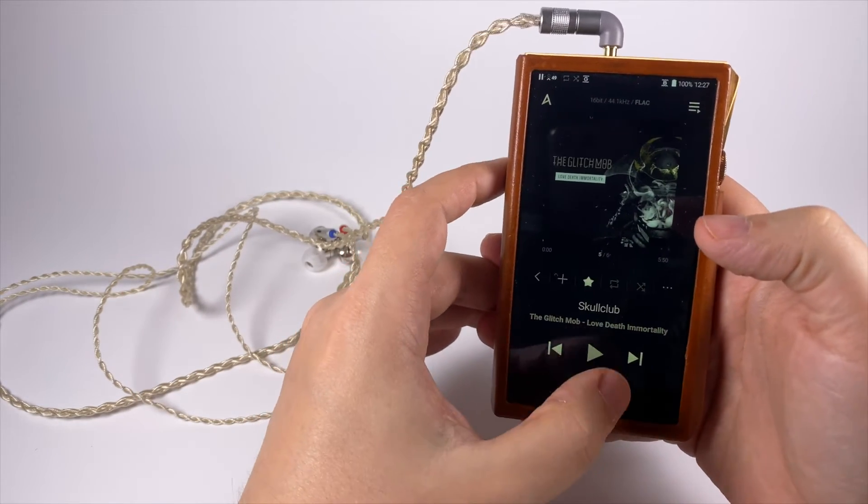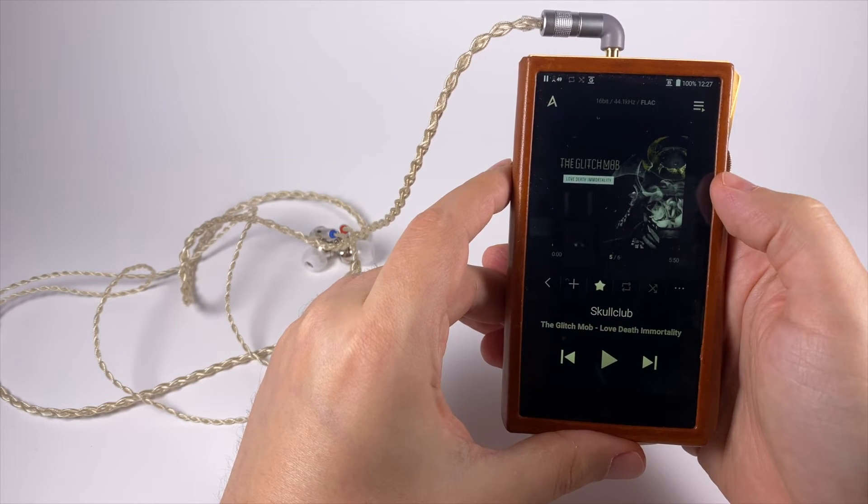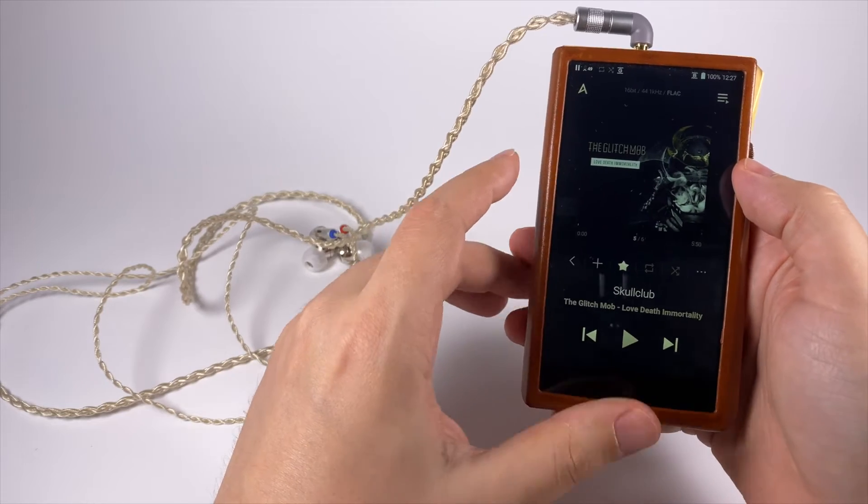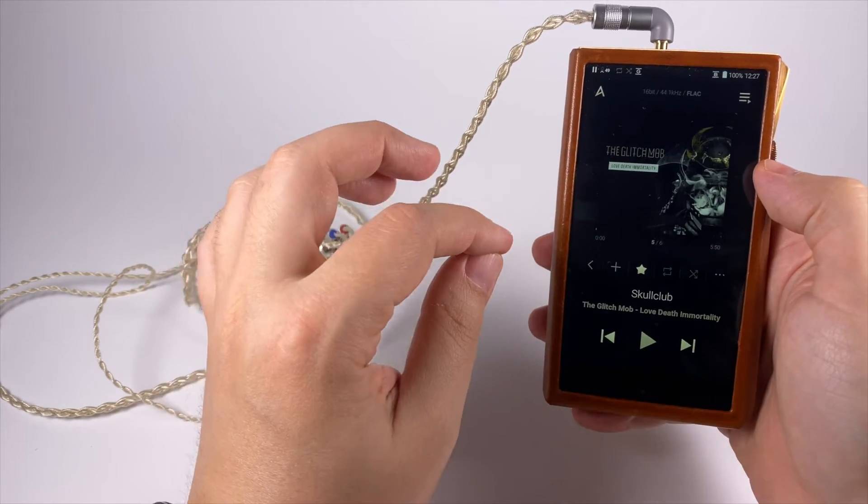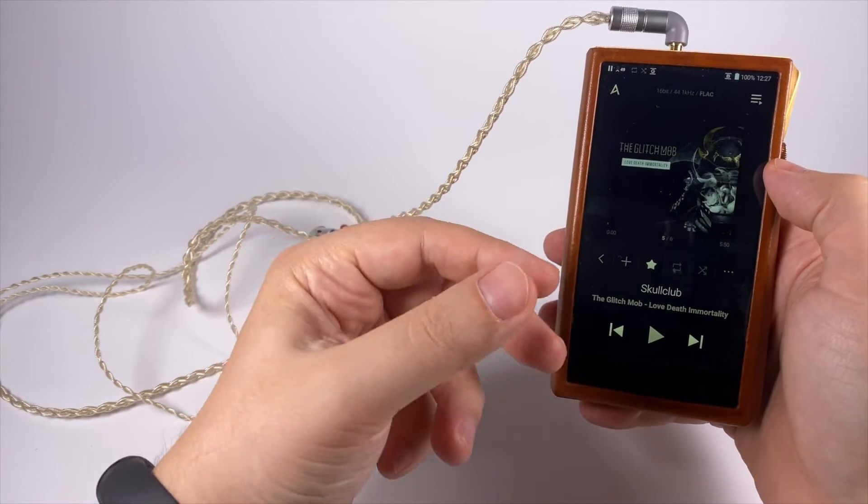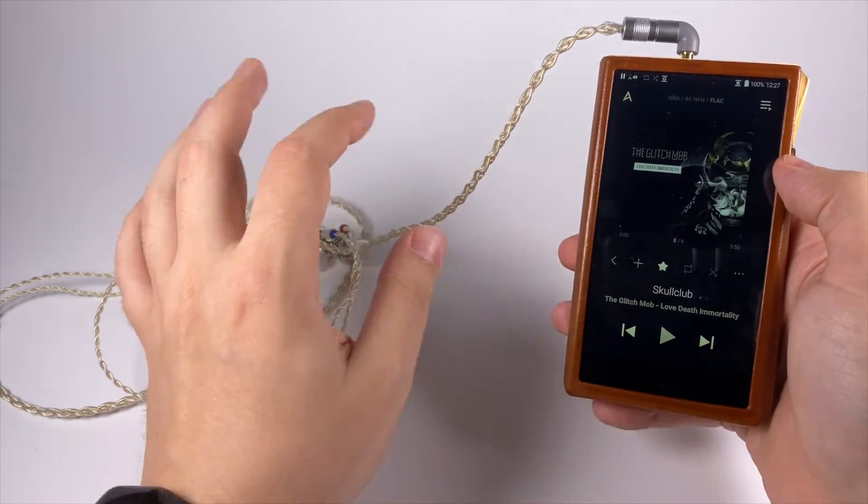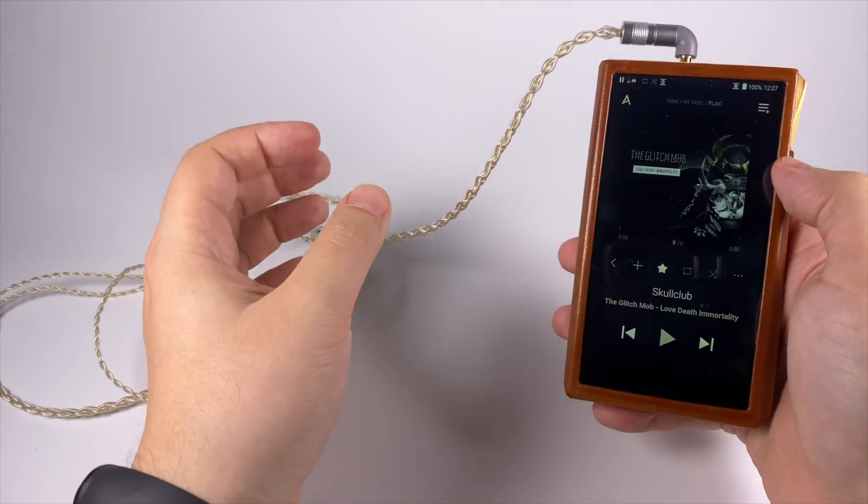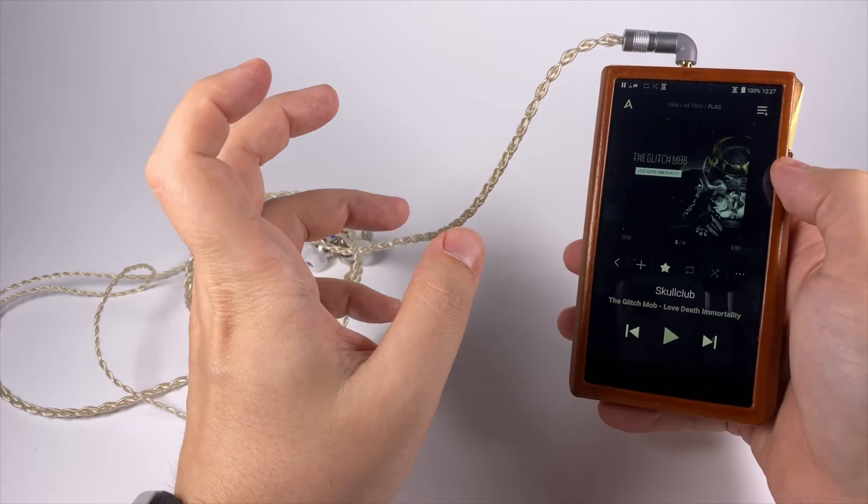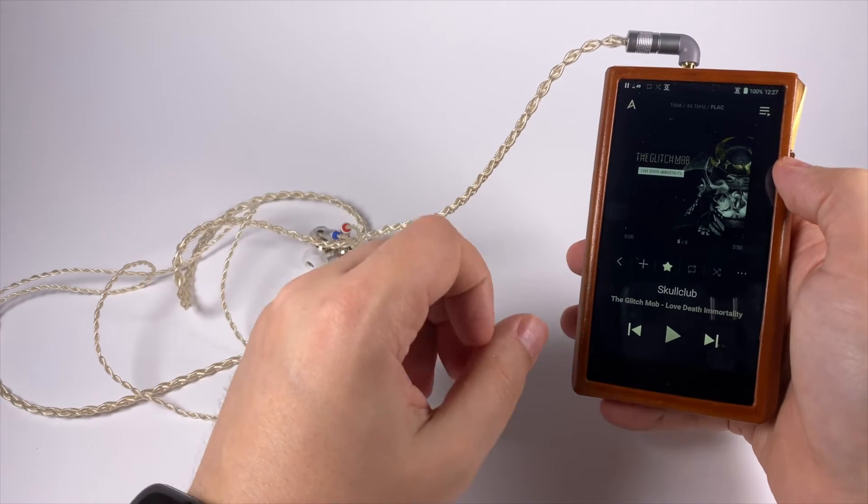And the second example: it's classical electronic music, The Glitch Mob - Skull Club. It's a nice bassline. Actually it's a really good test track for me that allows me to understand is this amount of bass enough for me or not. So for me it's more than enough - it's punchy and enjoyable, but at the same time not overdone. And actually if you're looking for some basshead model, definitely it's not your optimal choice.